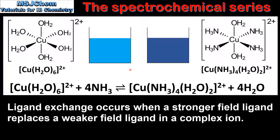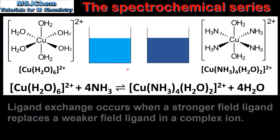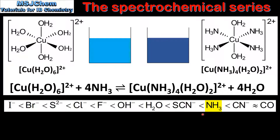This caused the color of the solution to change from light blue to dark blue. The difference in color is caused by a difference in the wavelength of light absorbed when electrons transition between the two sets of d orbitals. Looking at the spectrochemical series, ammonia is a stronger field ligand than water, and stronger field ligands produce a larger energy gap between the two sets of d orbitals. This means that the wavelength of light absorbed when an electron transitions from the lower set to the higher set of d orbitals decreases.